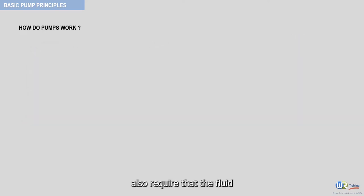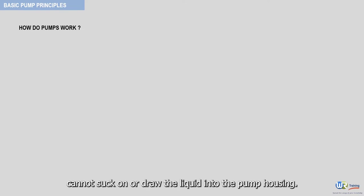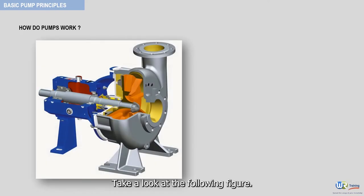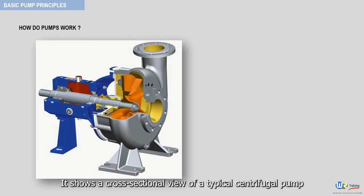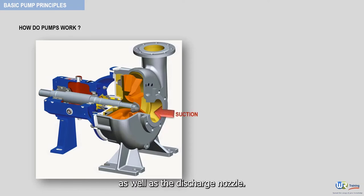Centrifugal pumps also require that the fluid be available to the pump suction nozzle with sufficient energy. Centrifugal pumps cannot suck on or draw the liquid into the pump housing. Take a look at the following figure — it shows a cross-sectional view of a typical centrifugal pump. The suction nozzle is highlighted here, as well as the discharge nozzle.